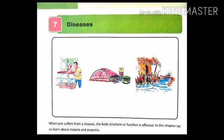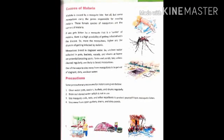Chapter 7: Diseases. In this chapter we have already studied about malaria. We have studied that malaria is a vector-borne disease and is caused by mosquito bite — especially the female Anopheles is responsible for malaria. We also studied the precautionary measures to stay away from malaria.